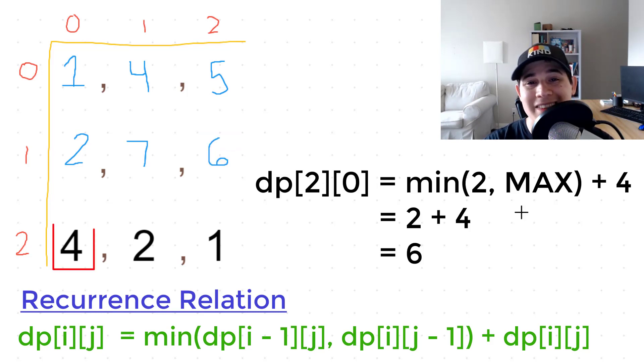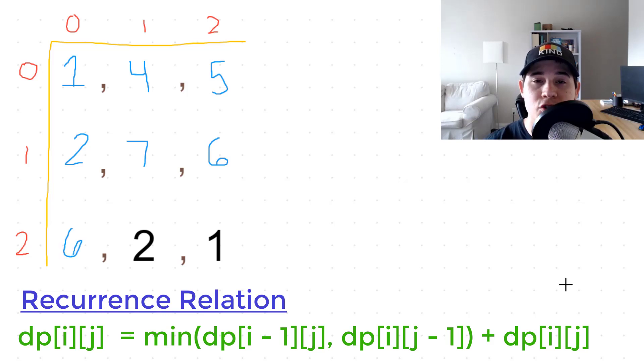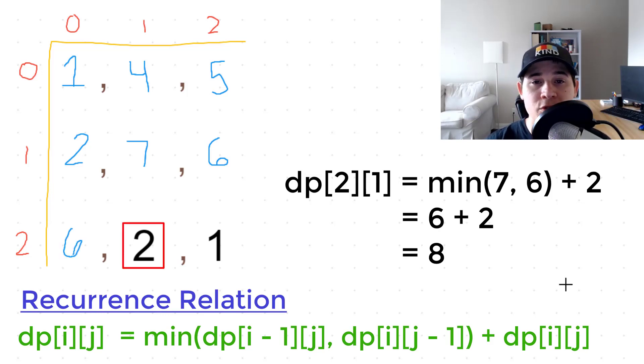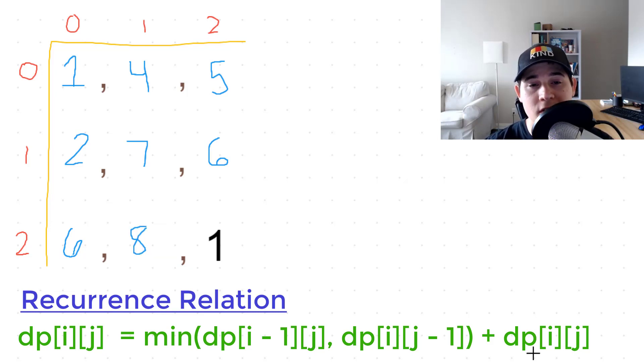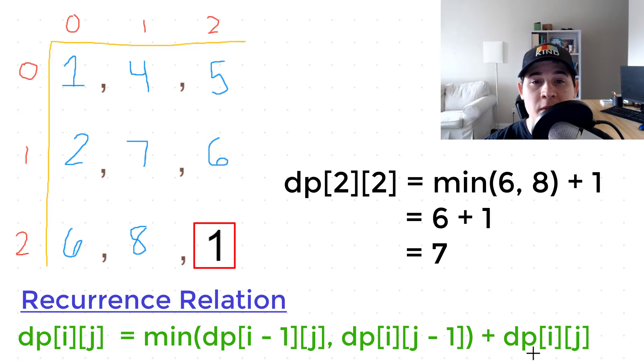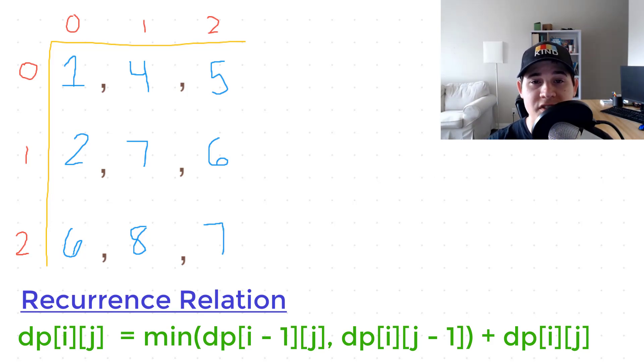Position (2, 0). The left of us is out of bounds. So we have to immediately take the top element, which would be 2 plus our current element. 2 plus 4 is 6. Position (2, 1), we're going to get the minimum between 6 and 7. So 6 plus 2 is now 8. And then finally, we look at position (2, 2). We get the minimum between 6 and 8. So 6 plus our current position of 1 is 7. So we arrived at our final answer of 7.